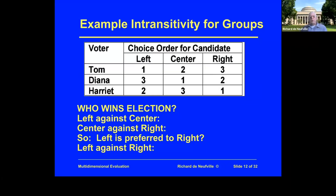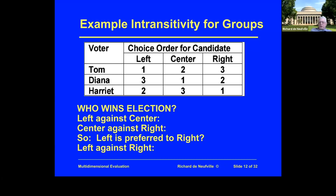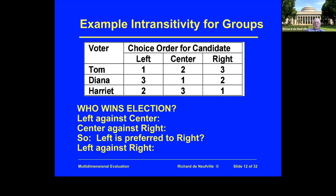Let's look at this simple example. We have three prospective voters: Tom, Diana, and Harriet. Tom is very much on the left — a Sanders fan. The further toward the right you are, the less he likes you. Diana, on the other hand, is a center-of-the-road kind of person who doesn't like the extremes — she might lean slightly conservative. And Harriet is completely conservative; she doesn't like wishy-washy people in the middle, so she prefers either right or left, but not anyone in the middle.